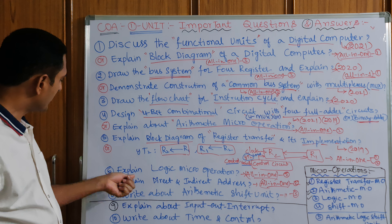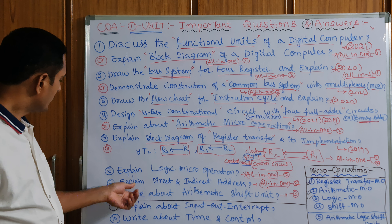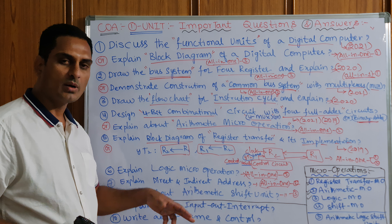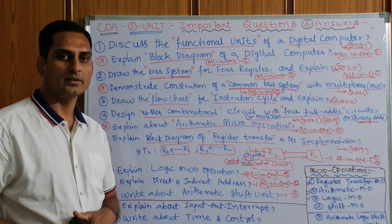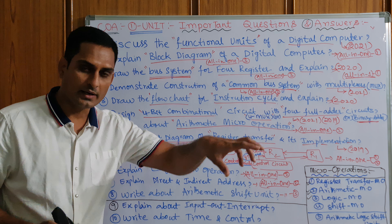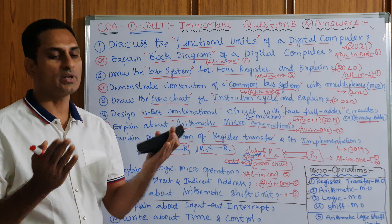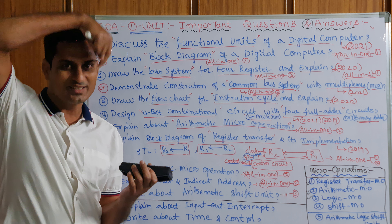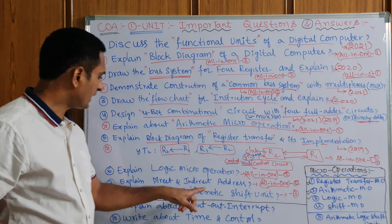Next: explain logic micro operation — this is a direct question. Also: explain direct and indirect address — this is a subtopic and I probably have not shot this video yet. Direct address means you directly get the operand value. In indirect address, an address is given; in that address another address is there, and in that address you find the operand. That has a diagram — if you see the diagram you will understand. I will try to post this video.